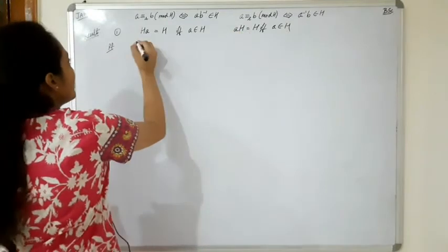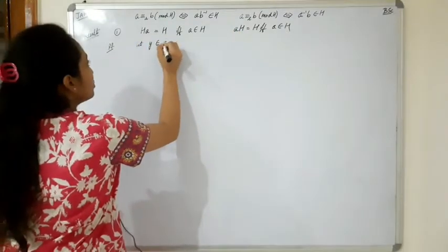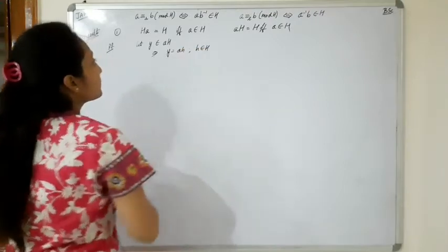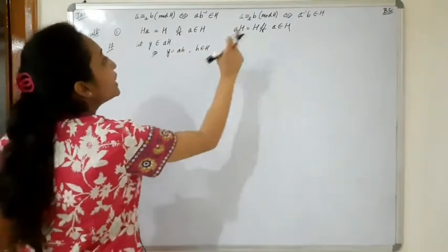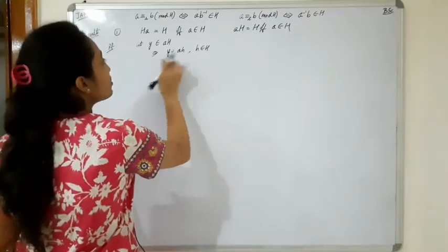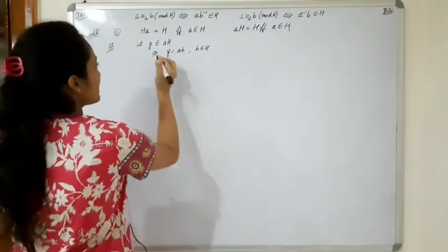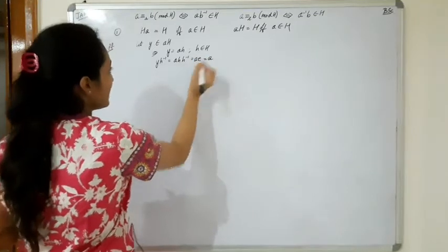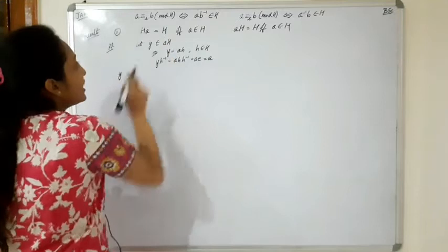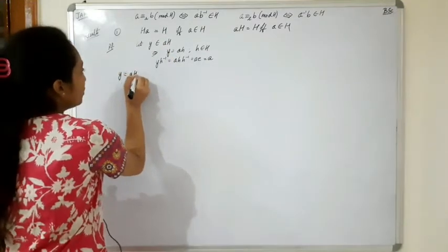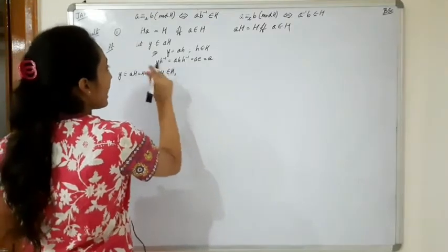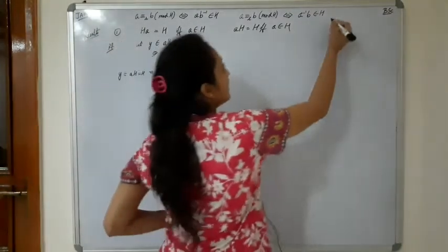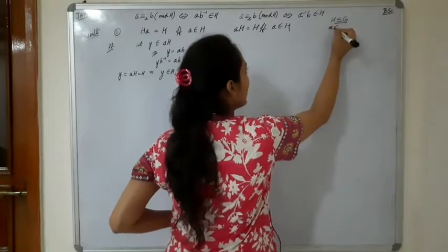Let's consider Ha. Let y belong to Ha, so y is of the form ha for h belonging to H. Now let's prove Ha equals H. I'll operate from the right side: y·h⁻¹ is equal to a·h·h⁻¹, that is a. Which in turn implies y belongs to Ha which is equal to H, which in turn implies y belongs to H.